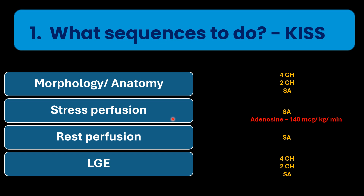Then we do a stress perfusion in short axis — one with adenosine at 140 micrograms per kilogram per minute, and one without any drug, just giving contrast to see how it behaves in the right and left ventricle. Then we take late gadolinium enhancement images in three planes: four-chamber, two-chamber, and short axis.